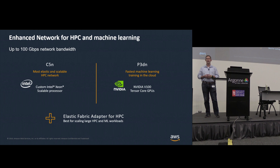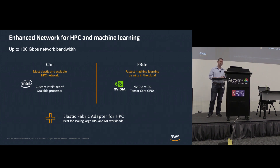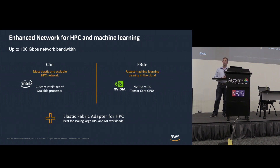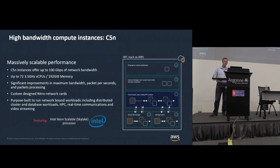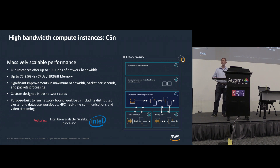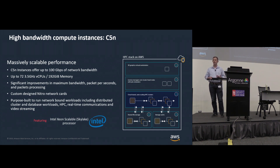Here are the two instances we offer our EFA low-latency fabric on: one is compute-optimized for workloads that can excel at scale, and then we have instances for accelerated workloads running NVIDIA GPUs. The C5N is our compute-optimized instance — that 'N' on the end tells you it has enhanced networking, so whereas the standard C5 has 25 Gbps networking, the C5N offers 100 Gbps networking.